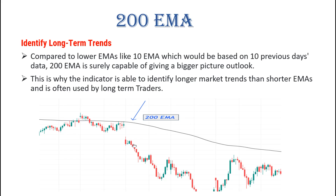Why should we keep the 200 EMA in our trading? Compared to lower EMAs like the 5 EMA or 10 EMA, which are based on only the previous 10 days' data, the 200 EMA gives the bigger picture because it takes the average of the past 200 days or past 200 candles. That is why this indicator is able to identify longer market trends. It is often used by long-term traders — swing or positional traders — to understand the overall trend of a stock, index, or any instrument.